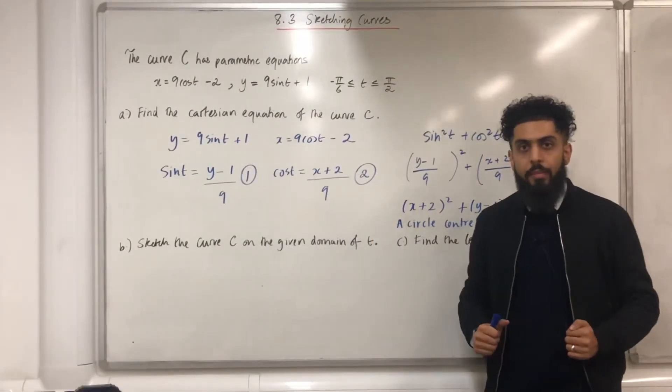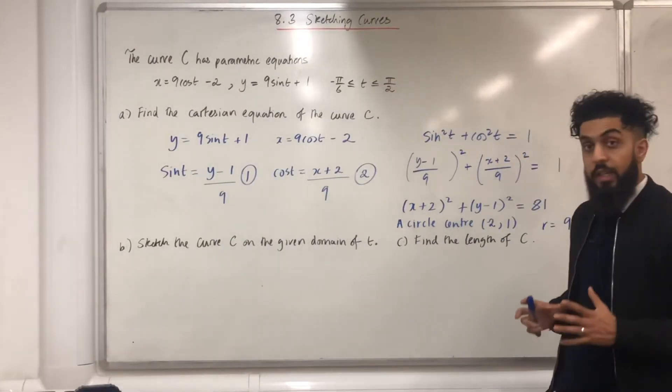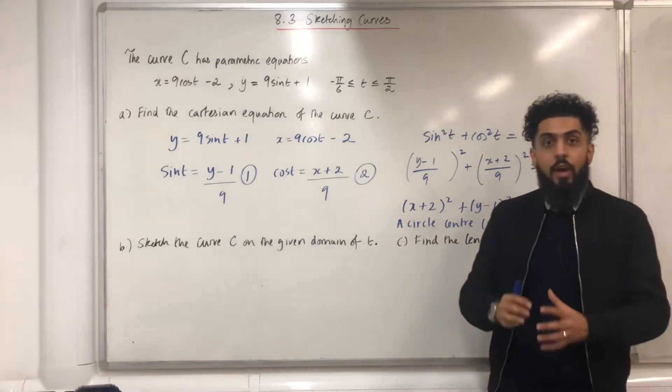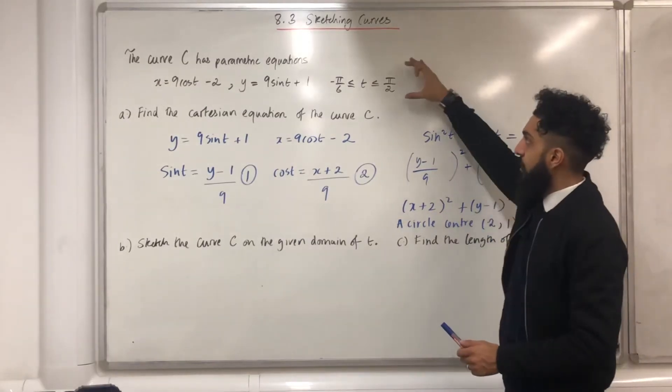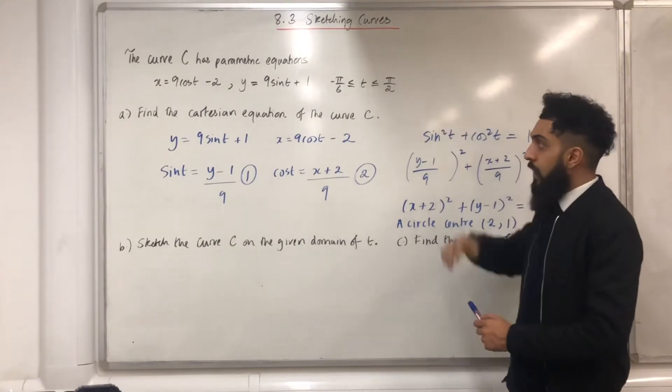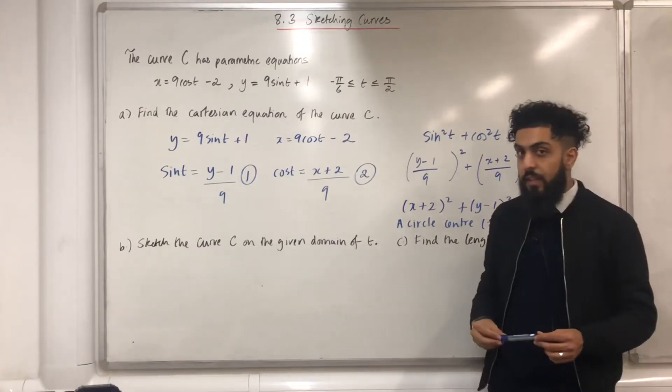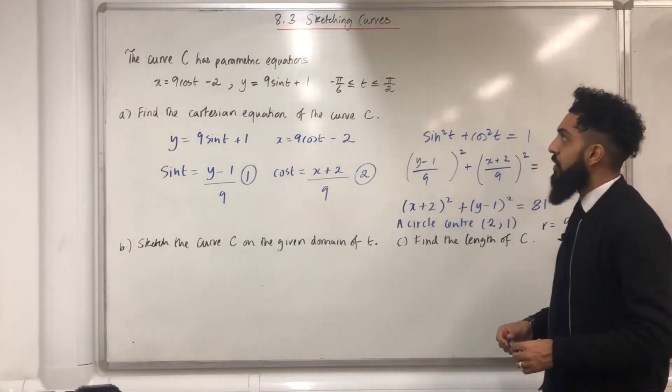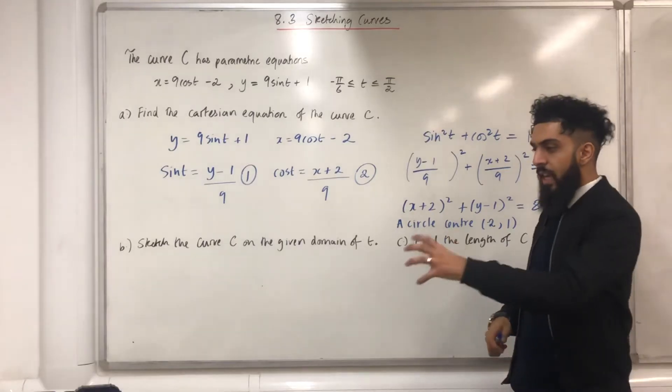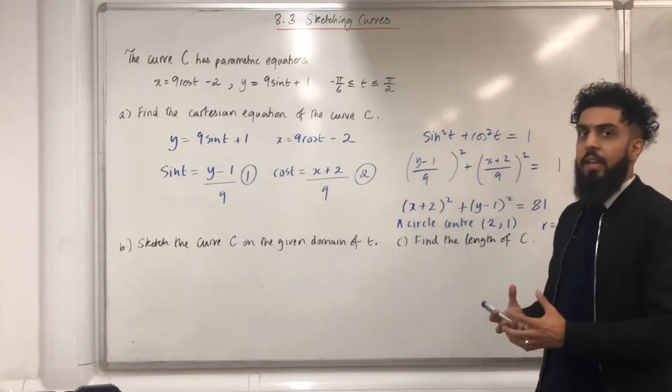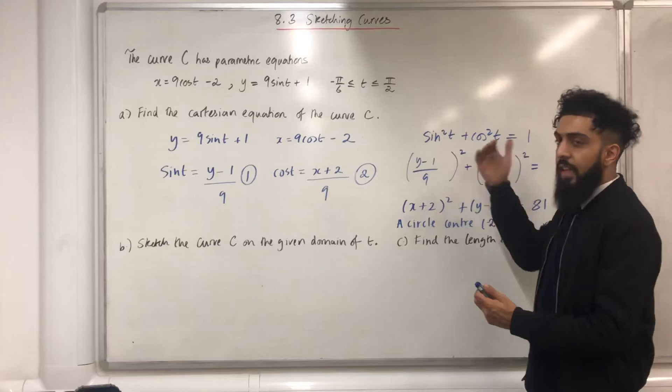Moving on to part B. It says sketch the curve C on the given domain of t. Now ladies and gents, I want you all to focus on the domain of t over here. So t is more than or equal to minus pi over 6, but less than or equal to pi over 2. So I've got a negative and I've got a positive. I can conclude that t equals 0 is in this interval.